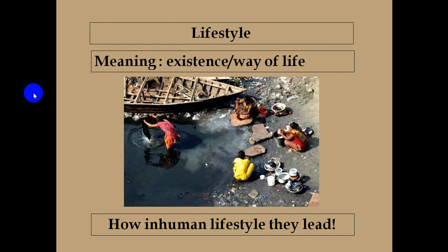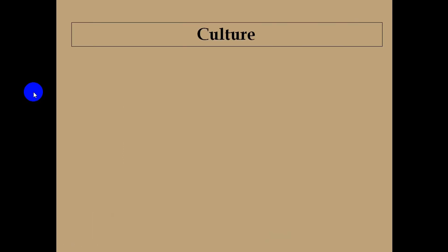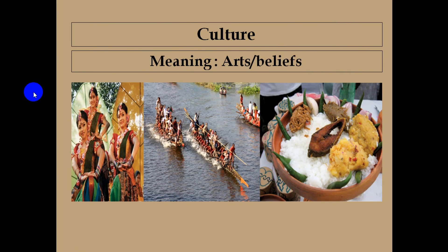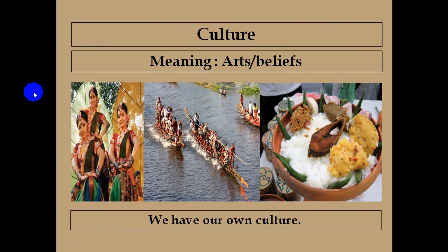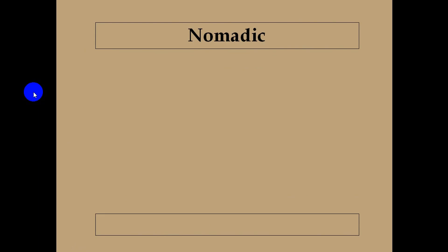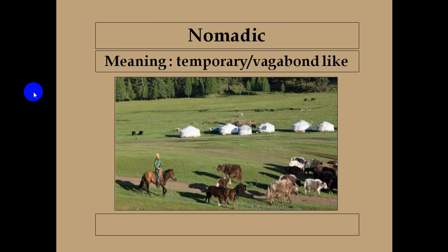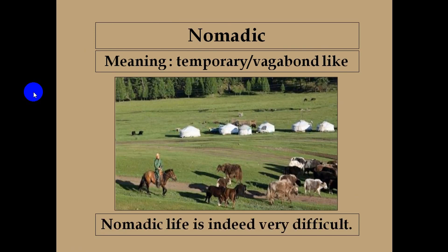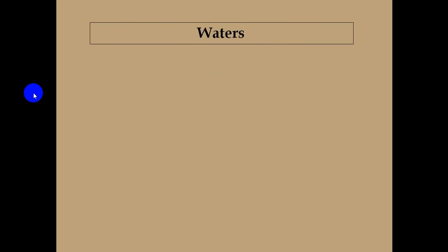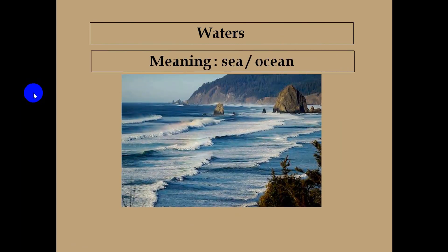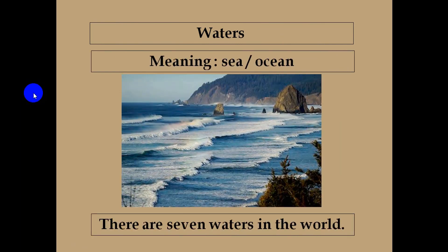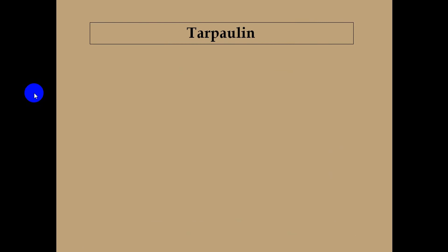Our third vocabulary is Culture, which means Arts or Beliefs. We have our own culture. Another vocabulary is Nomadic, which means Temporary or Vagabond-like. Nomadic life is indeed very difficult. Another is Waters, which means Sea or Ocean. There are seven waters in the world. Another is Tarpaulin, which means Canvas or Thick Cover. This is a tarpaulin — a wet tent.